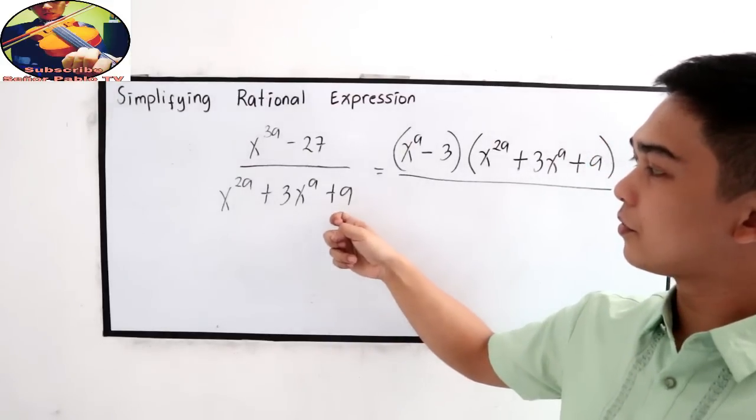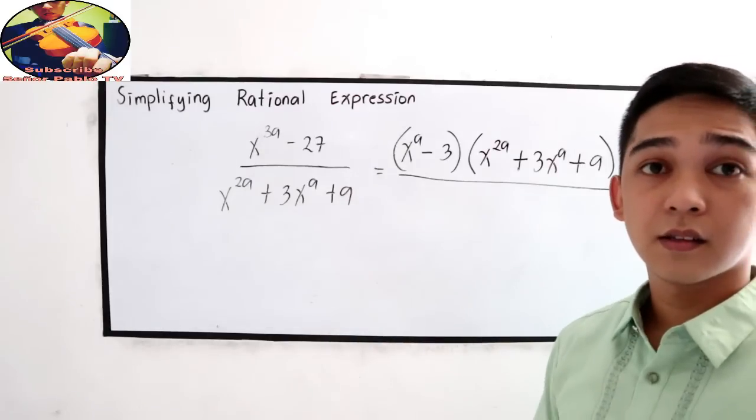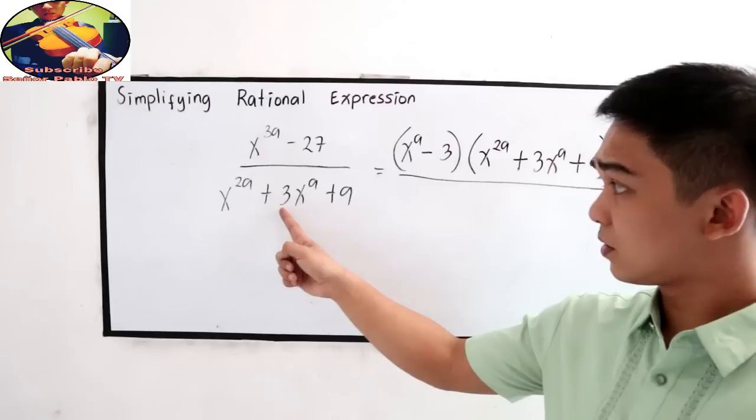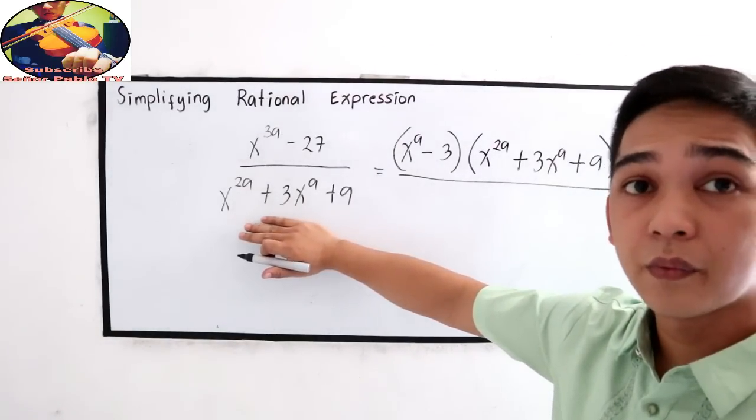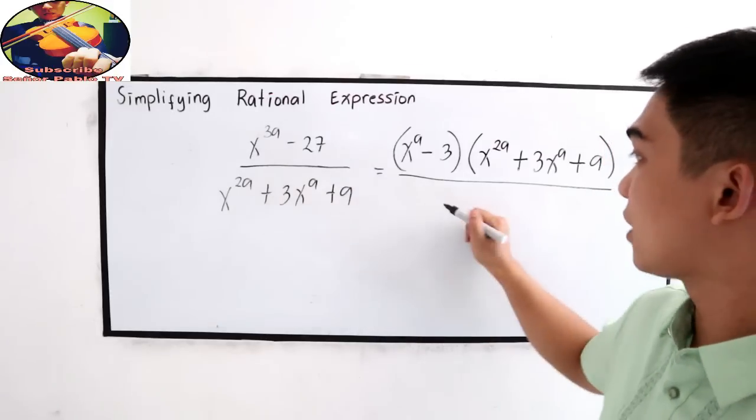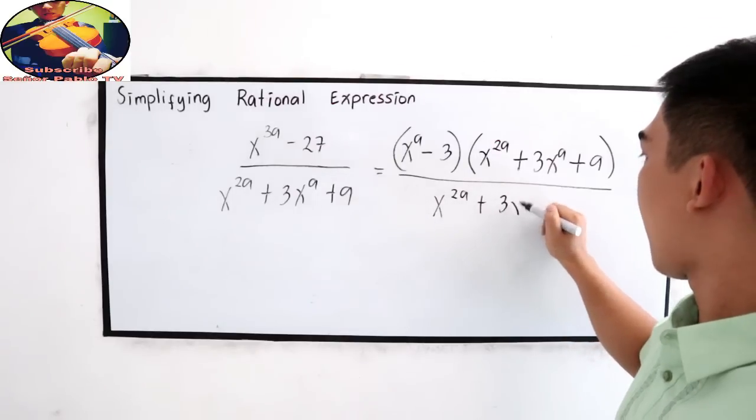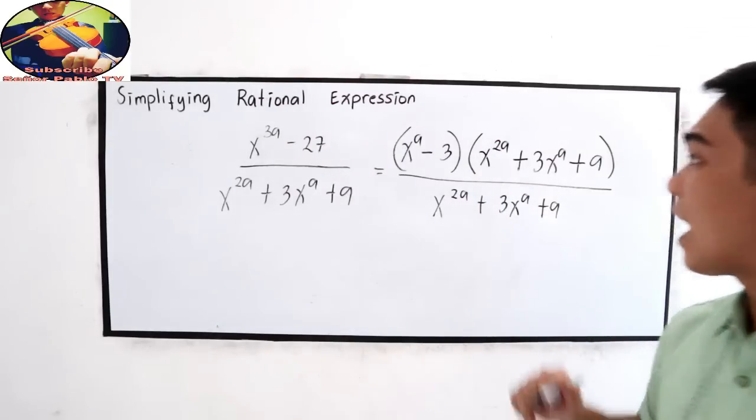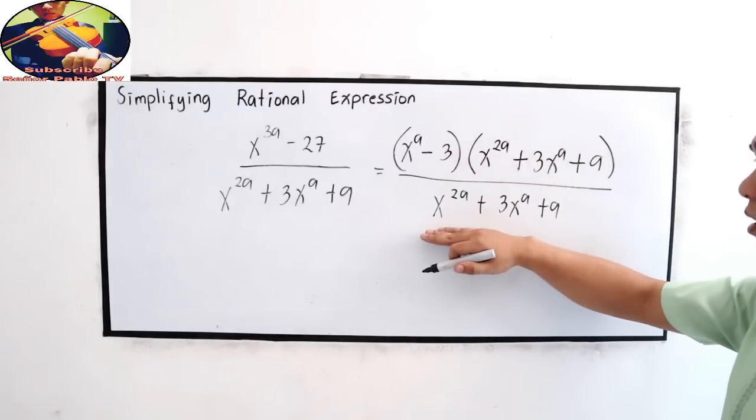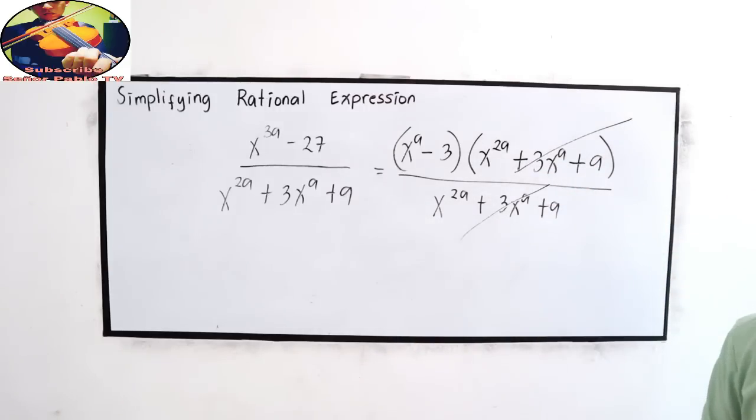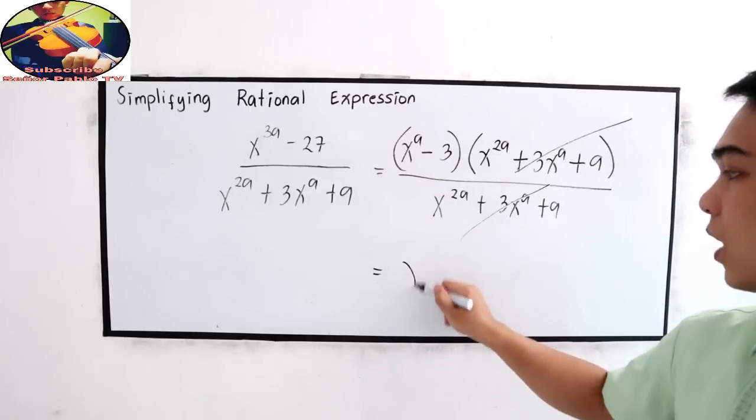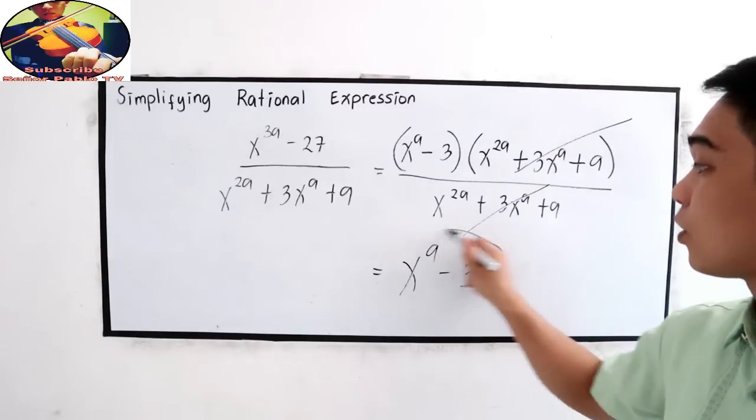Our denominator, can it be factored out? There is no factor. So, just copy our denominator x raised to 2a plus 3x raised to a plus 9. And now, take a look at our factored form and denominator. Do we have the same expression? This one is the same as our denominator. So, we can cancel them out. Now, we have x raised to a minus 3. This will be our final answer.